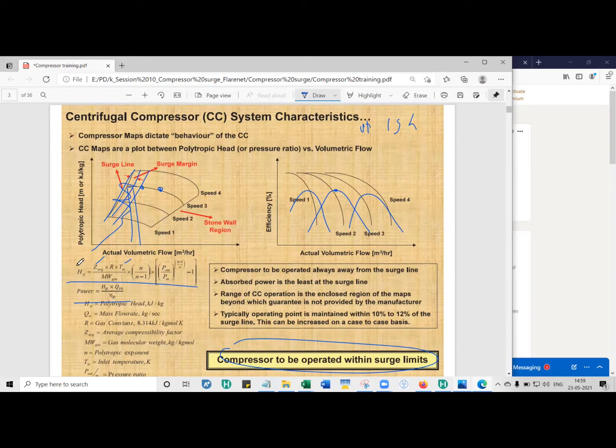With that, we can estimate what is the polytropic head, that is, how many kilojoules of energy is required to compress one kilo of gas from an initial pressure to a final pressure. So higher the polytropic head, higher is the amount of energy required to compress a kilo of gas to the required pressure ratio.